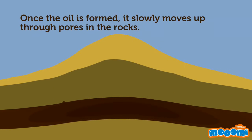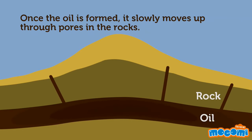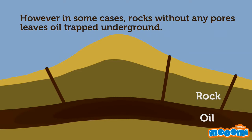Once the oil is formed, it slowly moves up through pores in the rocks. However, in some cases, rocks without any pores leave oil trapped underground.